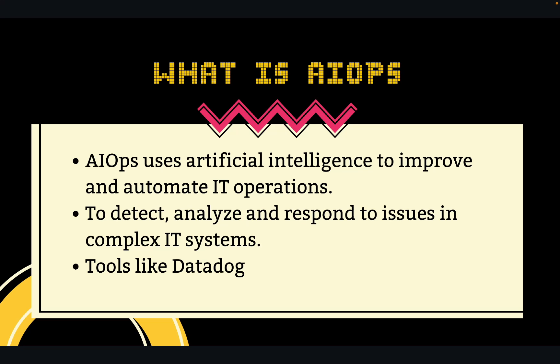AIOps takes data from logs and other sources, detects, analyzes, and then responds to issues in your system. You can think of it like an assistant to your DevOps or MLOps team — it helps those teams find root cause analysis, detect anomalies, predict anomalies, and help fix and resolve issues. Simple examples of AIOps tools include Datadog and New Relic.